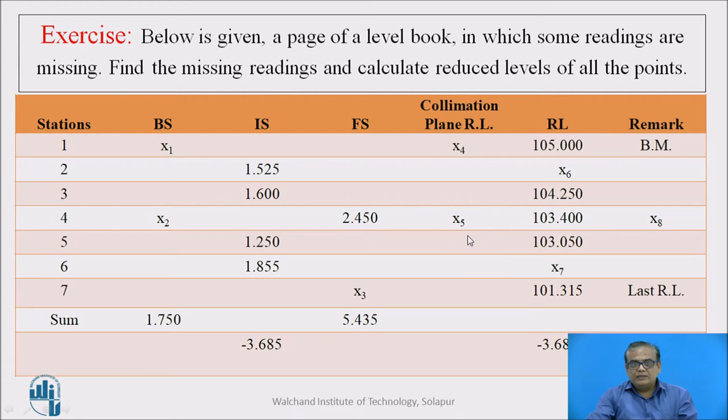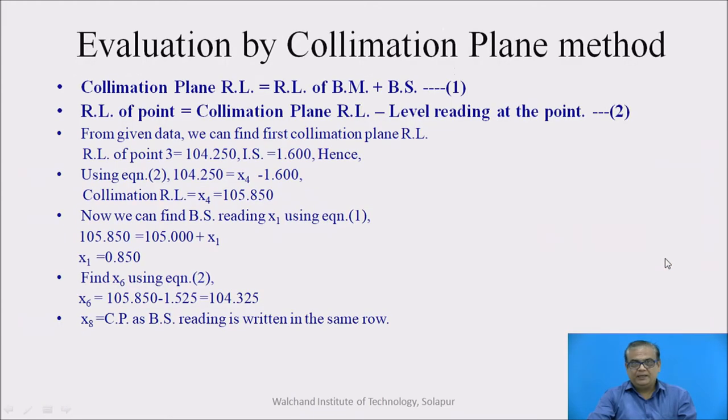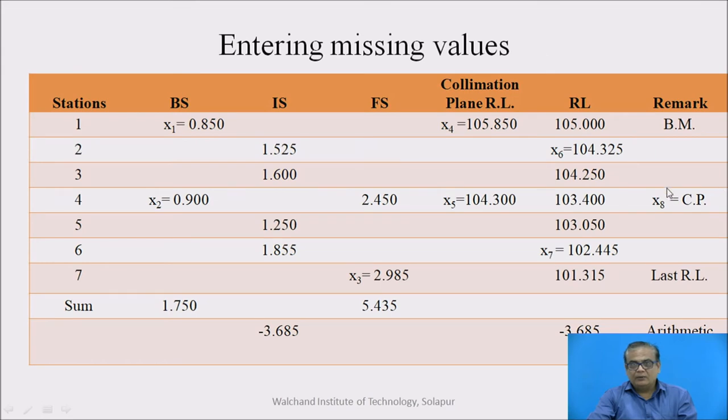Now here we will see that we will observe that change point is there. How to know which is the change point? See here, foresight reading and backside reading, both are written in the same row. This indicates that this is a change point. So x8 means in the remarks column here, there should be change point. Remark should be there. So change point is required to be written here in this fashion. So record it.